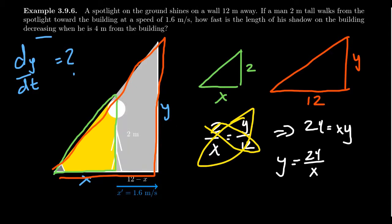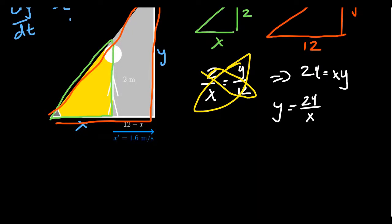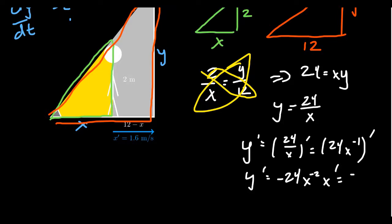Now we're going to take the derivative here with respect to time. So we're going to get that y' is equal to 24 over x, which as we're taking a derivative, I want to think of this as a power function. So I take it as x to the negative one. So we're going to get y' equals negative 24 x to the negative two times x', or in other words, negative 24 x' over x squared.